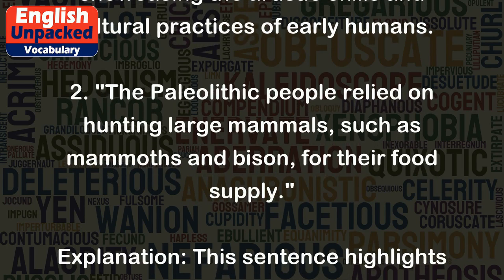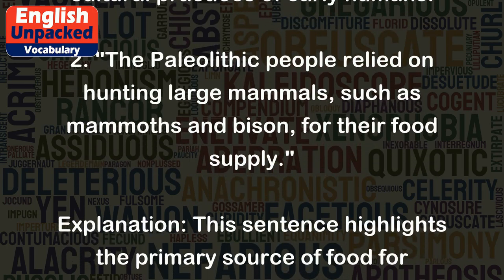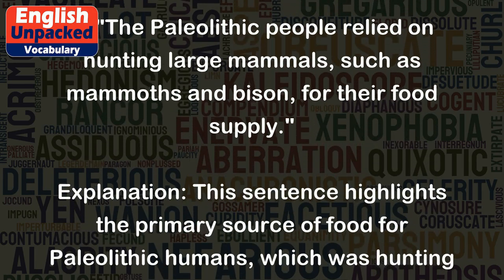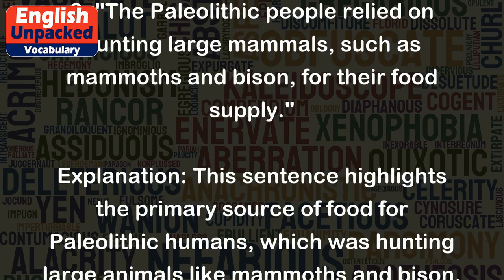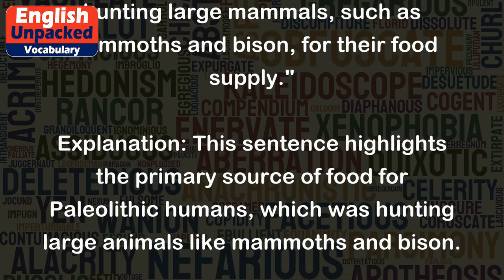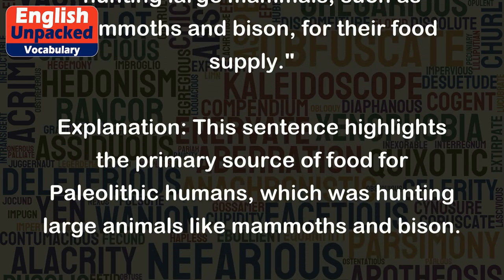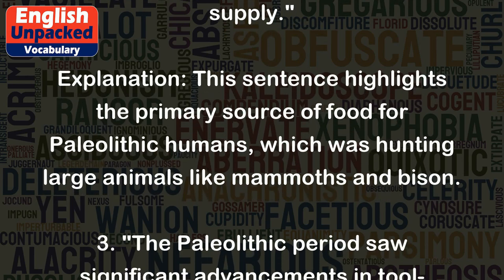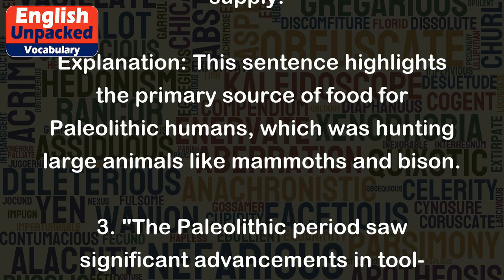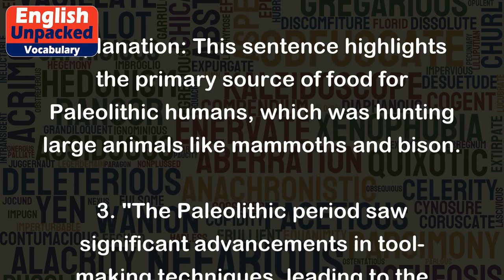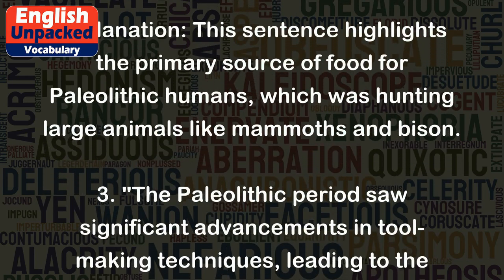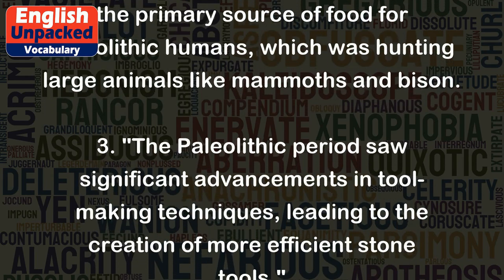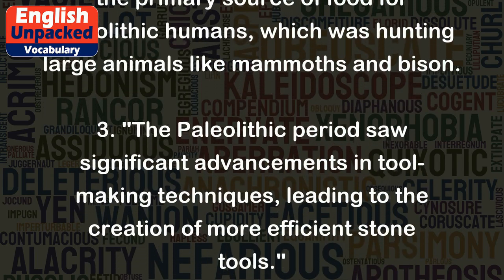2. The Paleolithic people relied on hunting large mammals, such as mammoths and bison, for their food supply. This sentence highlights the primary source of food for Paleolithic humans, which was hunting large animals like mammoths and bison.